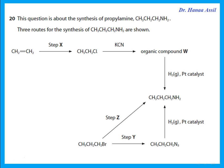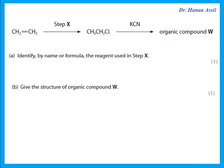This question is about the synthesis of propylamine. Three routes are shown. The first question asks about step X — we have an alkene and we're adding H and Cl, so the reagent is hydrogen chloride (or hydrochloric acid). For compound W: the chloride reacts with a cyanide/nitrile, removing the Cl and adding CN — a carbon with a triple bond to nitrogen in the displayed formula.